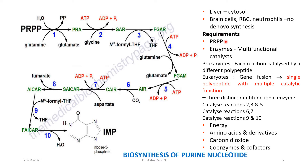This biosynthetic pathway requires an activated molecule — activated ribose 5-phosphate, otherwise called PRPP. There are 10 steps in this pathway, catalyzed by various multifunctional enzymes. In prokaryotes each reaction is catalyzed by a different polypeptide, but in eukaryotes, due to gene fusion, single polypeptides with multiple catalytic functions are seen. There are three distinct multifunctional enzymes: the first catalyzes reactions 2, 3, and 5; the second catalyzes reactions 6 and 7; and the third catalyzes reactions 9 and 10.